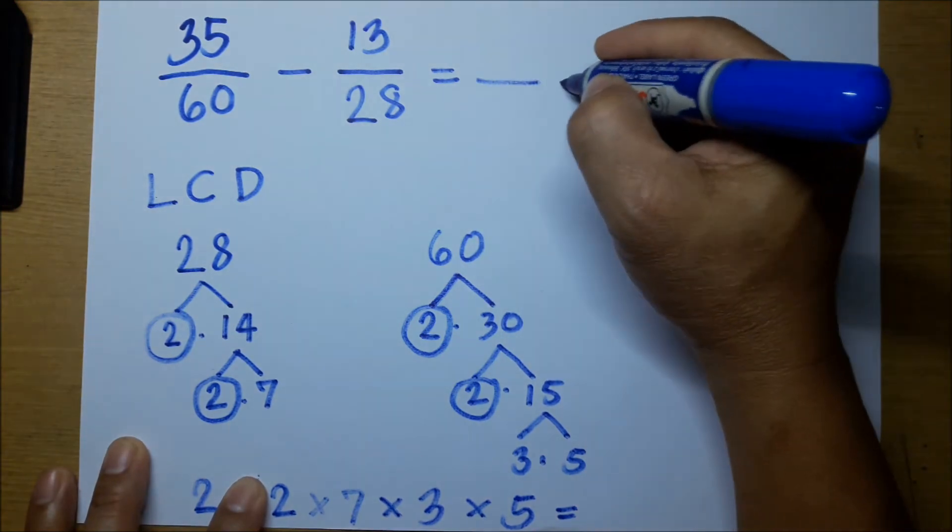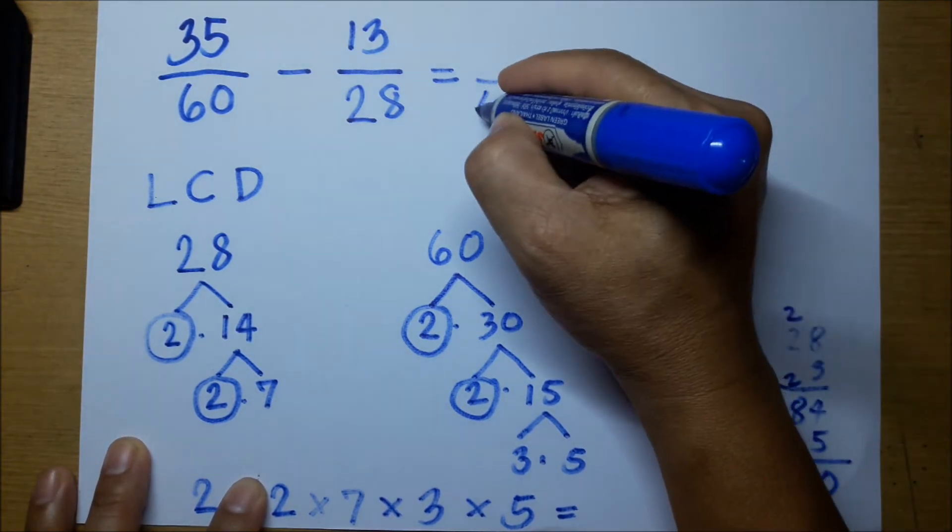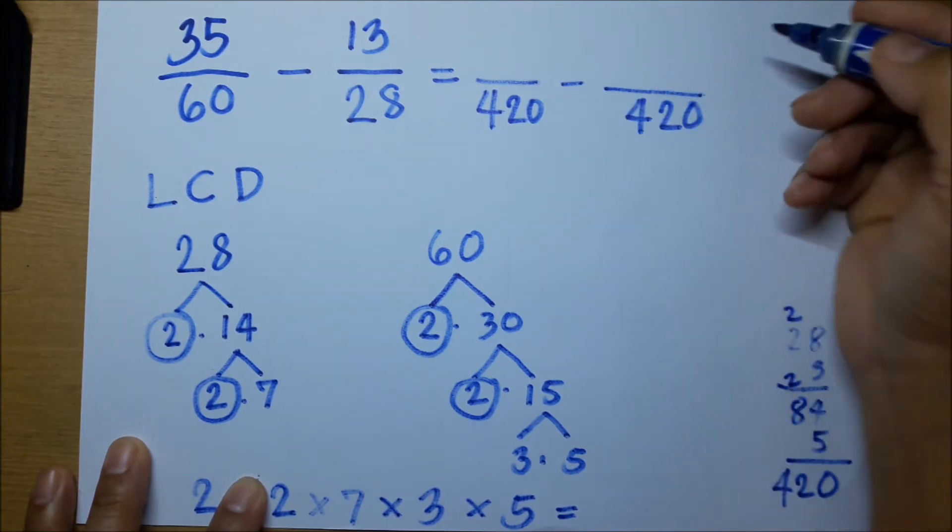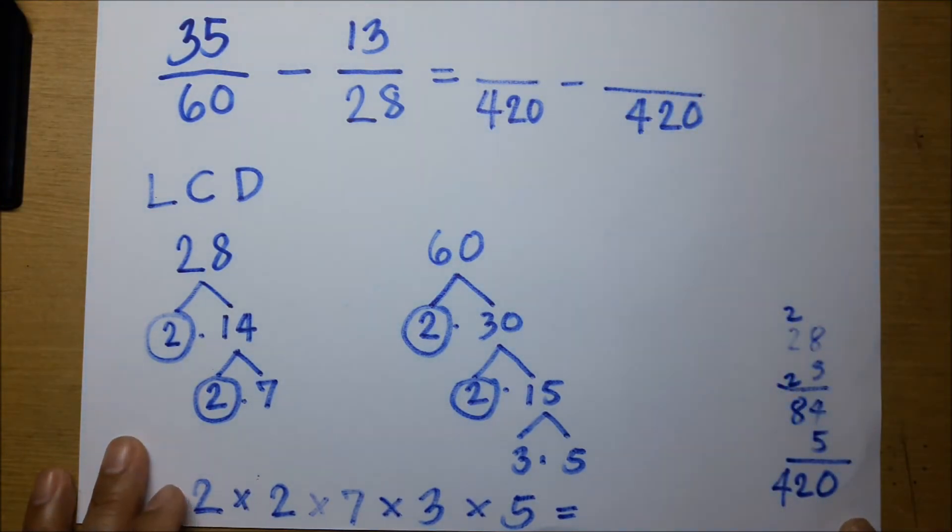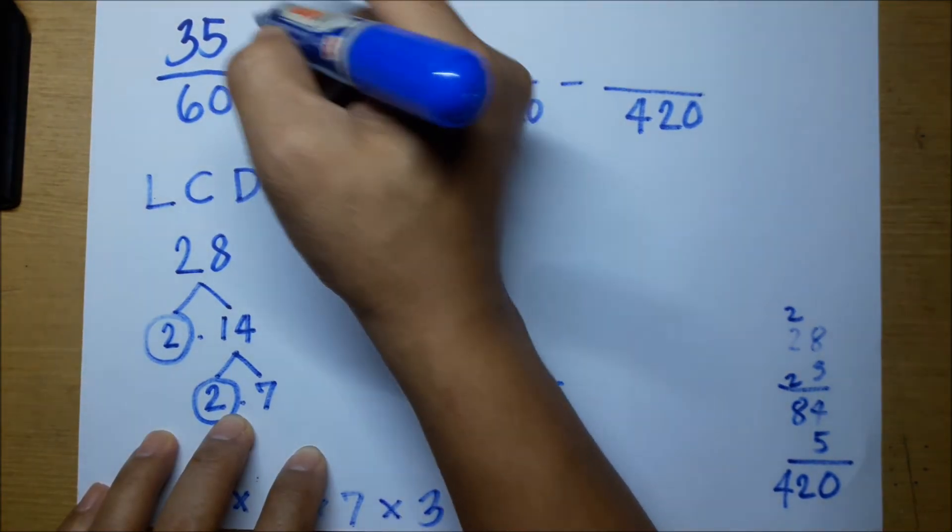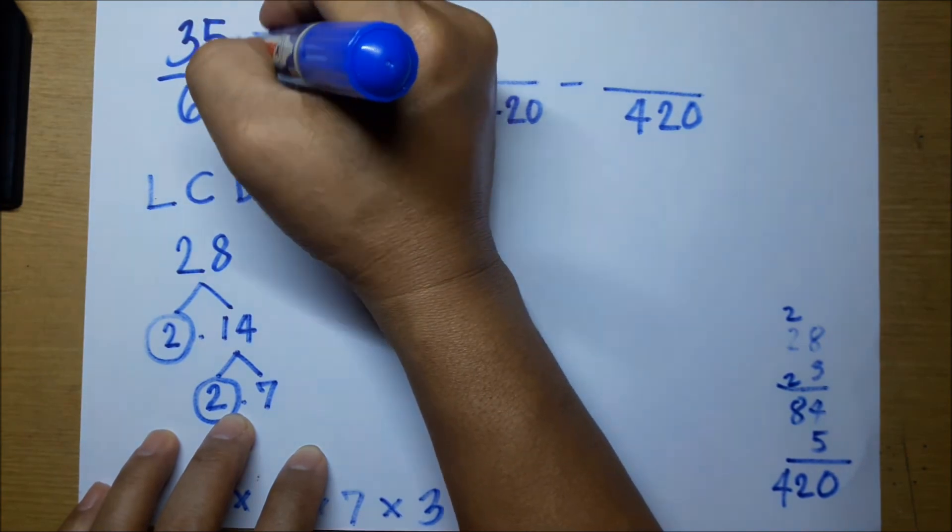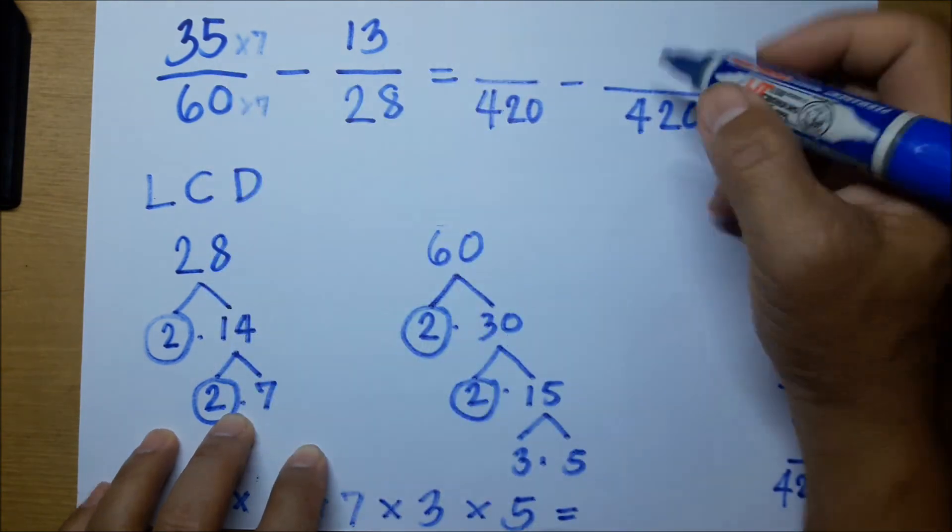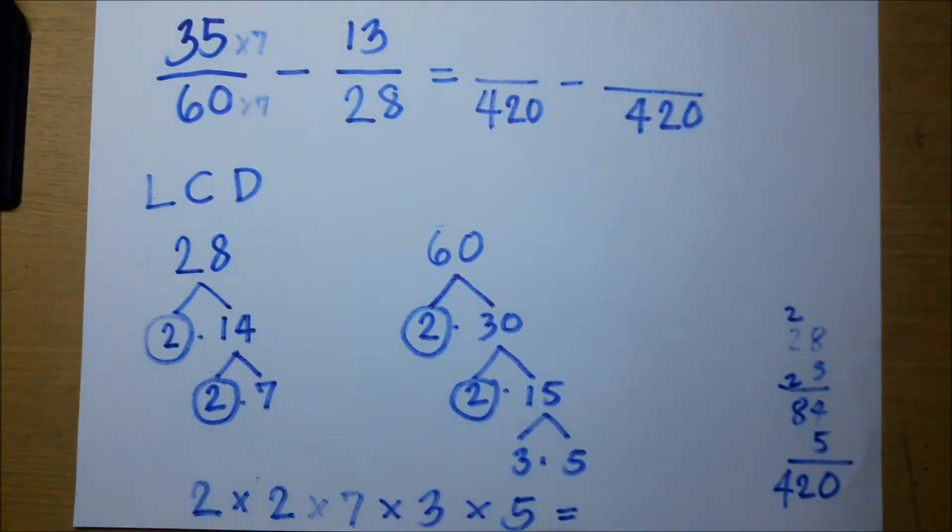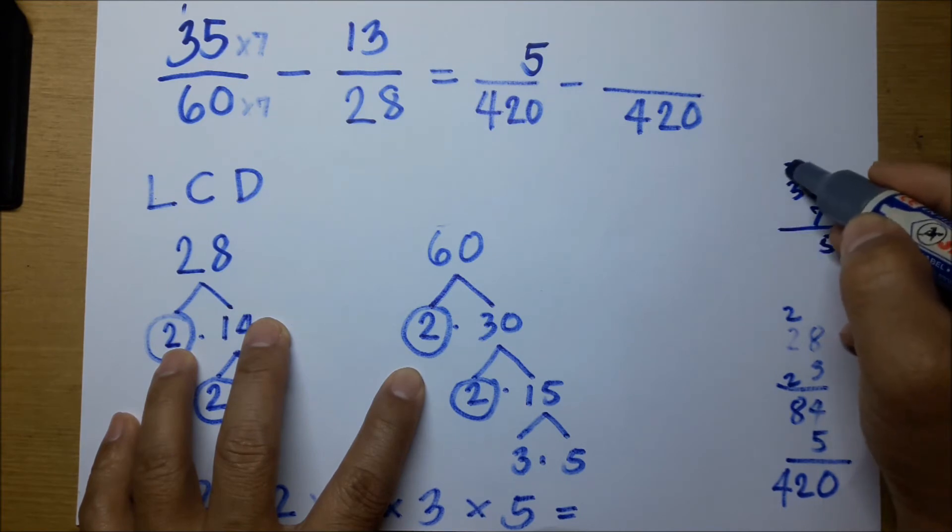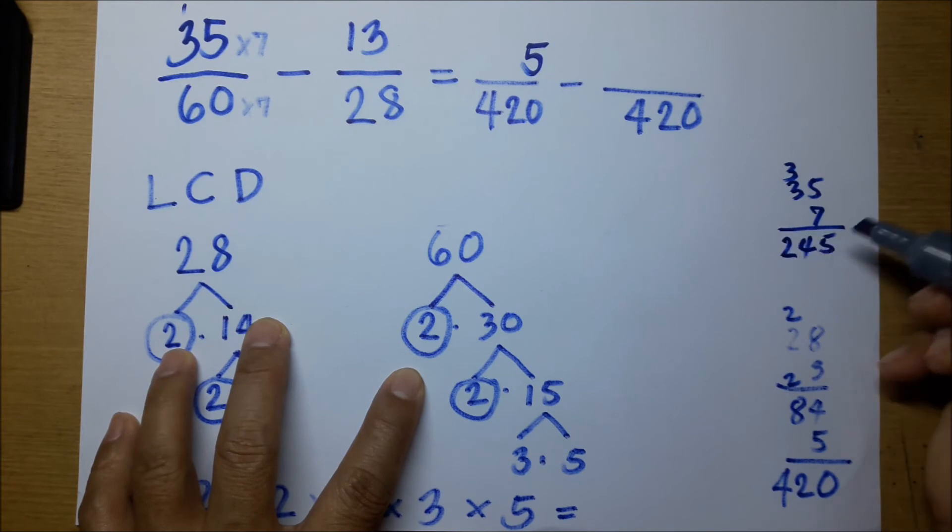420 divided by 60, multiply by 7. 35 times 7 gives us... 35 times 7 equals 245.